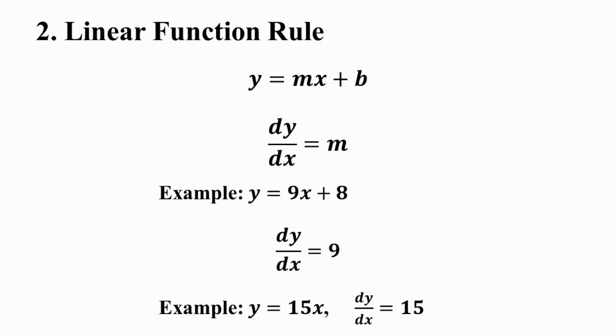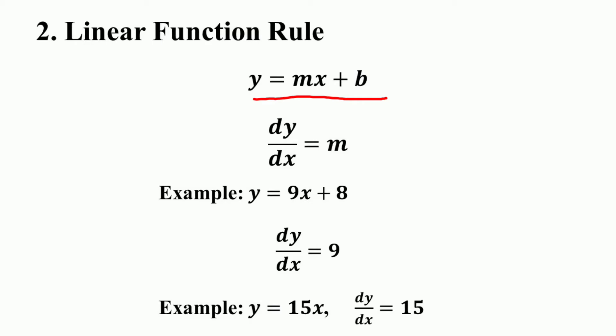The second rule of differentiation is the linear function rule. The derivative of a linear function — that is, a first degree polynomial function of one variable — for example y = mx + b, is equal to the coefficient of the variable, which is the coefficient of x, which is m here. So if y = mx + b, then dy/dx = m.